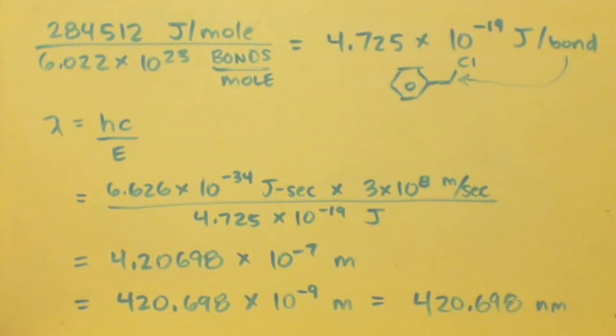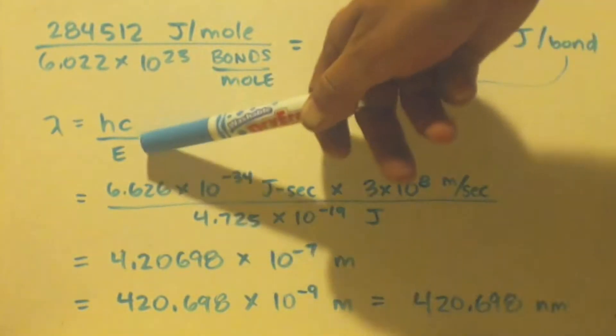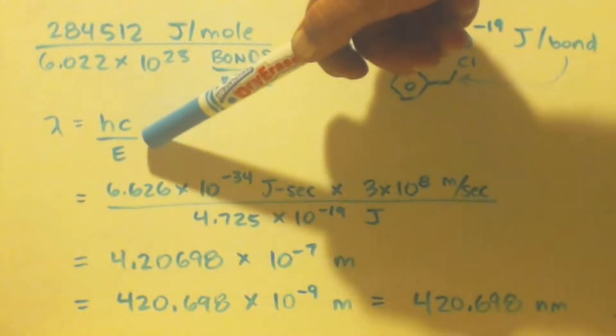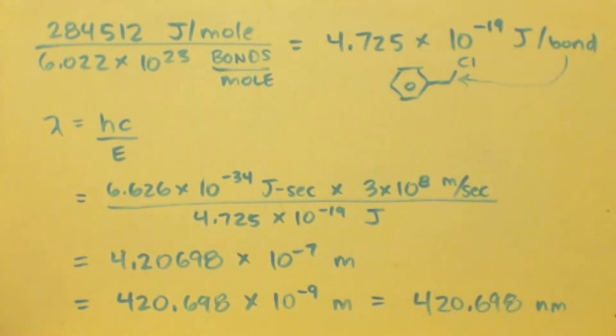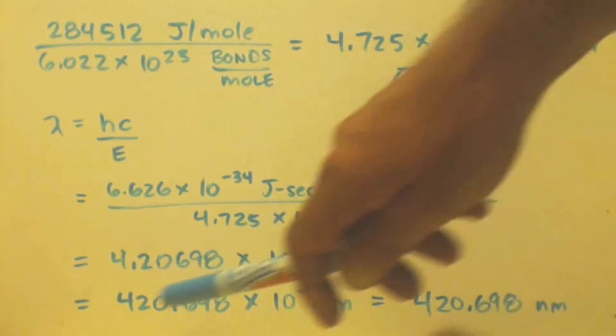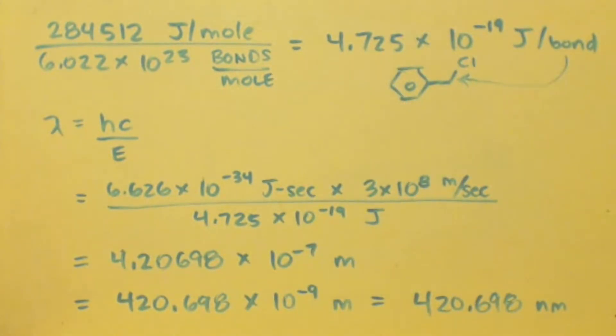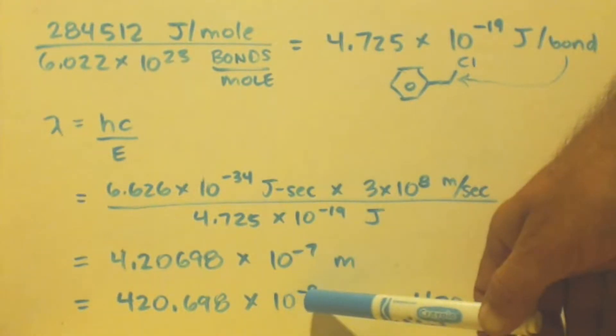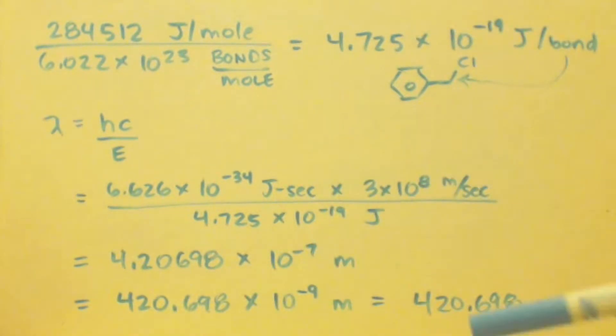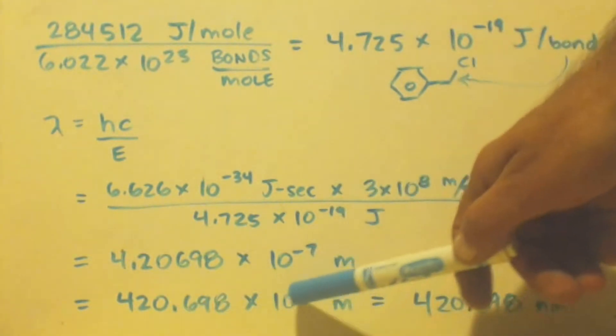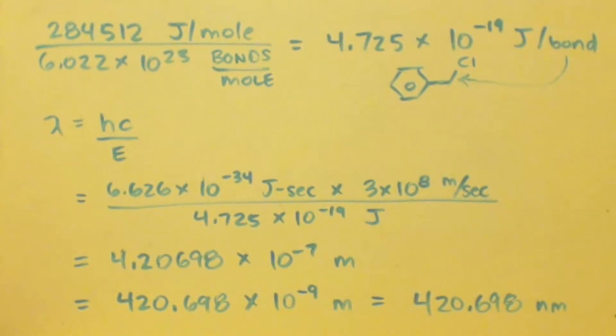Let's see what wavelength corresponds exactly to this much energy. We use lambda, this formula right here, which is Planck's constant times the speed of light divided by energy. We plug it in and get 4.2 times 10 to the negative 7 meters. We want to get it into 10 to the negative 9 so we can convert meters to nanometers. I change that by 2, move the decimal by 2, now I have 420 times 10 to the negative 9 meters. I just erase the 10 to the minus 9 and that M, and put an NM for nanometer - 420.698 nanometers.